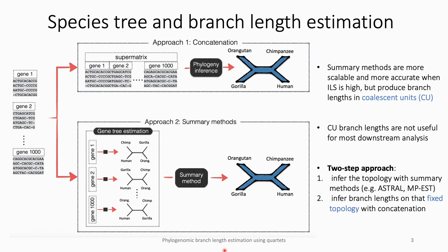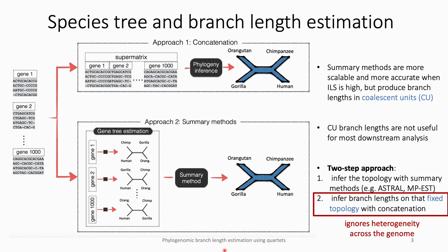Summary methods are increasingly used because they're more scalable and more accurate when ILS is high, but a shortcoming is that they produce branch lengths in coalescent units, which are not useful for downstream analysis. Studies that use summary methods are forced to take a two-step approach: first estimating the topology using the summary method, then inferring branch lengths in that topology using concatenation or other methods that don't account for gene tree discordance. But a major problem with this approach is that the branch length estimation step ignores gene tree heterogeneity across the genome, and this has been criticized in the literature.